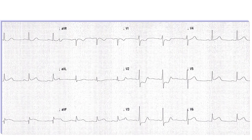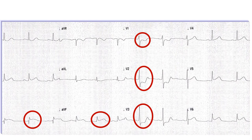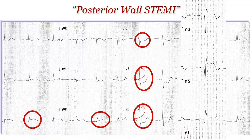In another example, we see ST elevation in leads 3 and AVF — an element of inferior wall STEMI. But if you look carefully, there is also ST depression in V1 to V3, with an upright T wave and quite tall R waves in V2 and V3. I would expect shorter R waves there. This appearance means that if you look at the heart from the back, flipping this ECG upside down, it would suggest you should suspect posterior wall STEMI.